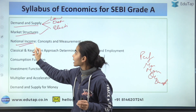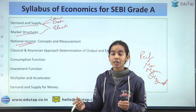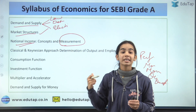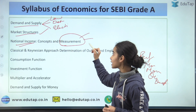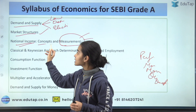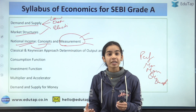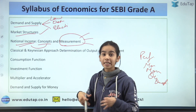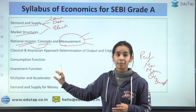Then comes national income. Understand the definition, and the measurement methods: expenditure method, income method, and value-added method. Also study the concepts — GDP, GNP, NNP, NDP — and the circular economy. That will be enough for national income.